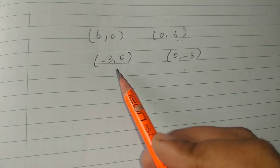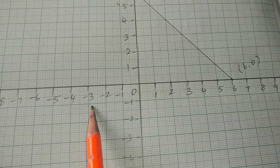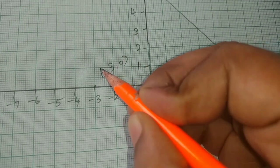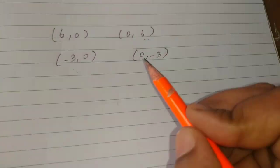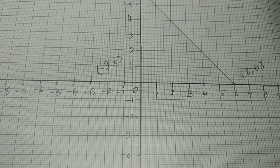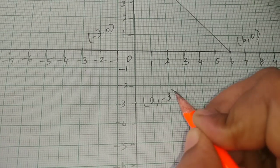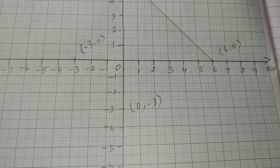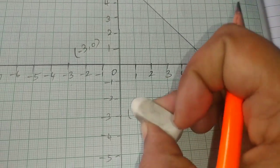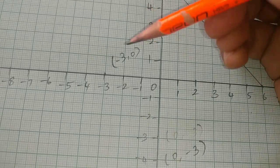Now for (-3,0): the x-axis is the negative part, so we move to minus 3 — the point is at (-3,0). Clear? Next, (0,-3): this is the y-axis negative part. So the point (0,-3) is placed here.